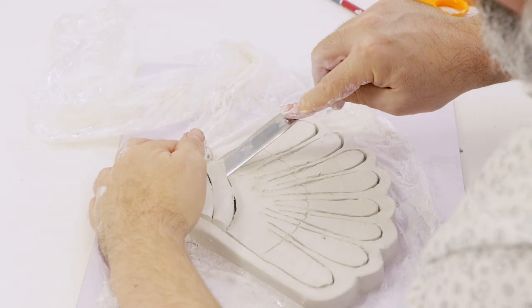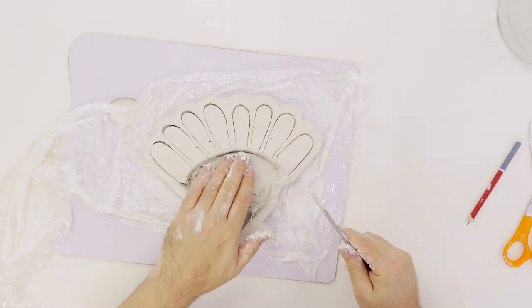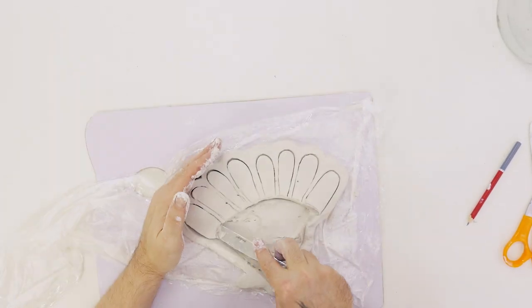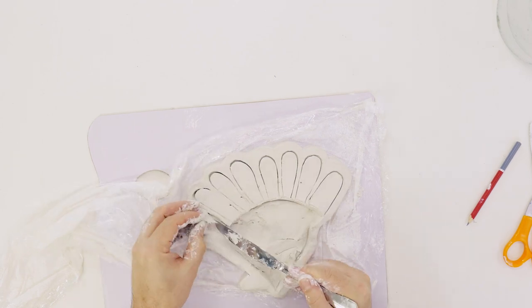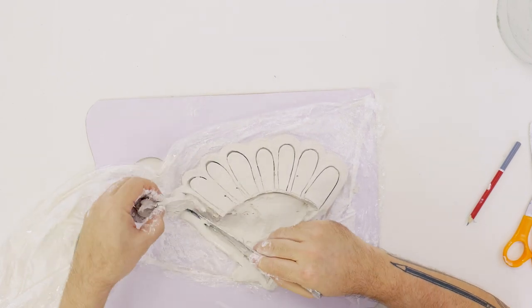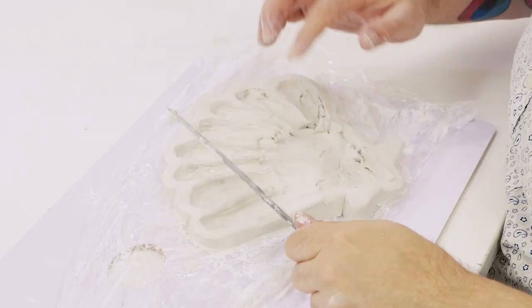Once the vertical cuts have been made, use the knife on its side to excavate the clay from the inside. Don't worry if the clay distorts and it's a bit rough, because we'll be smoothing it all out in the next stage.